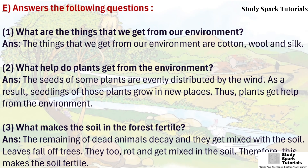Answer the following questions. First: What are the things that we get from our environment? Answer: The things that we get from our environment are cotton, wool and silk. Second: What help do plants get from the environment? Answer: The seeds of some plants are evenly distributed by the wind. As a result, seedlings of those plants grow in new places. Thus plants get help from the environment.